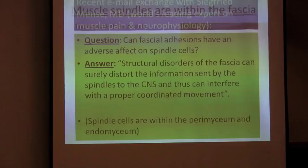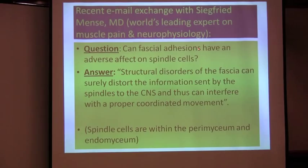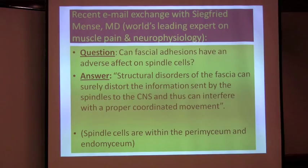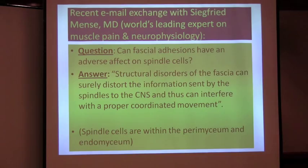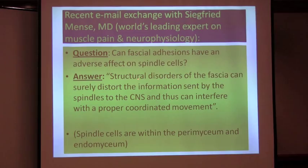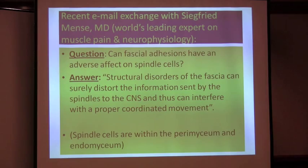We questioned this and consulted an authority by the name of Siegfried Mense, for whose slide I have permission to use. Siegfried is the world's leading expert on muscle pain and neurophysiology and has written more papers on muscle than anyone who has ever lived. We asked whether fascial adhesions can have an adverse effect on spindle cells. And this is what he said: 'Structural disorders of the fascia can surely distort the information sent by the spindles to the central nervous system, and thus can interfere with proper coordinated movement.' So they call them muscle spindle cells — they should really call them fascial spindle cells, of course, since they're in those layers around the muscles.